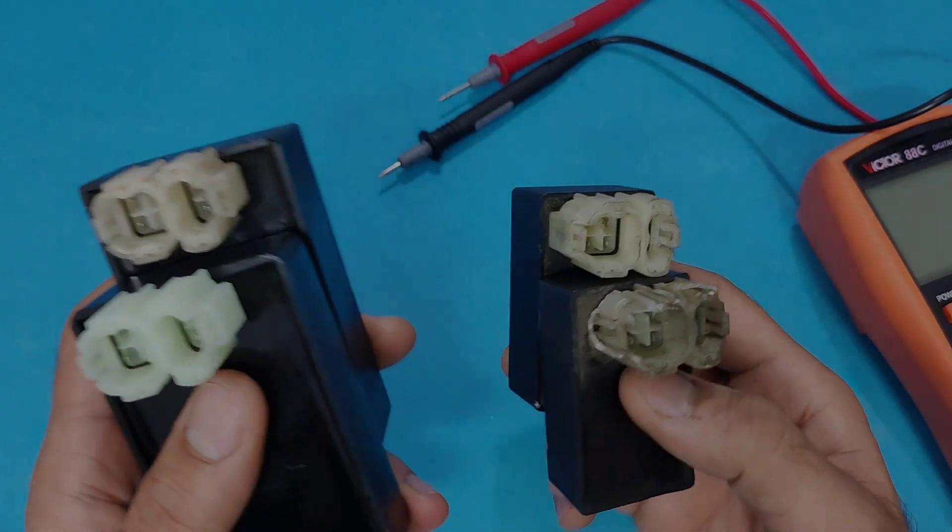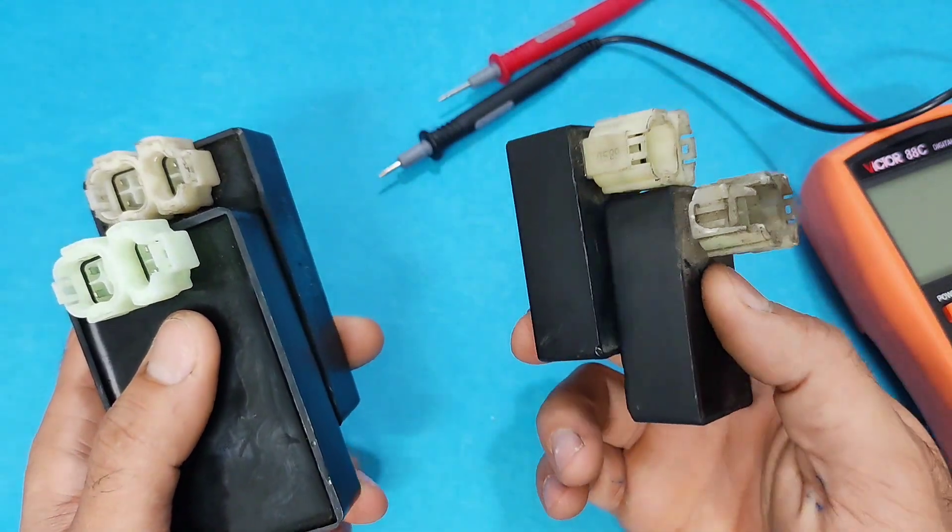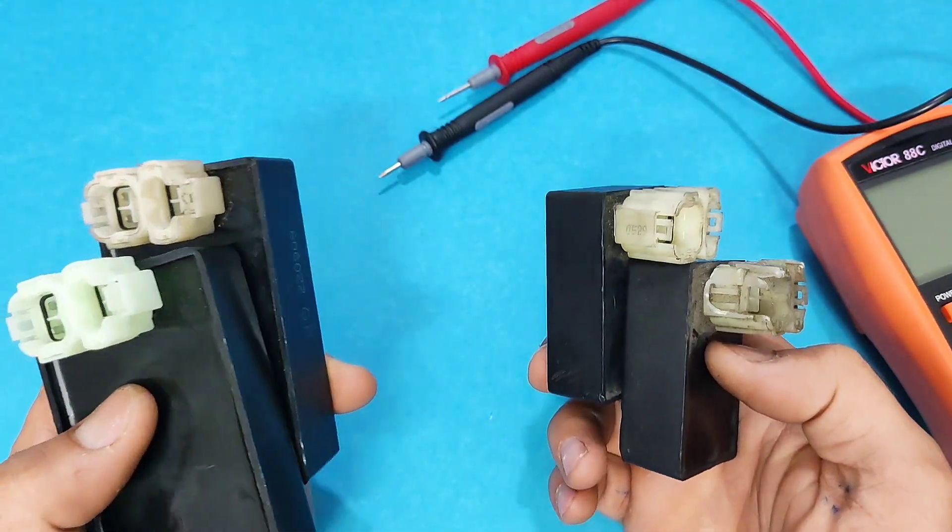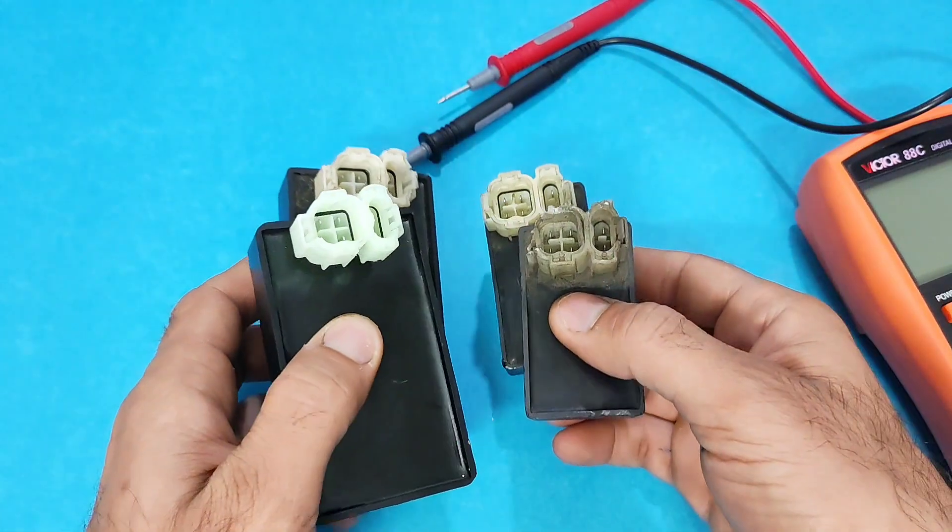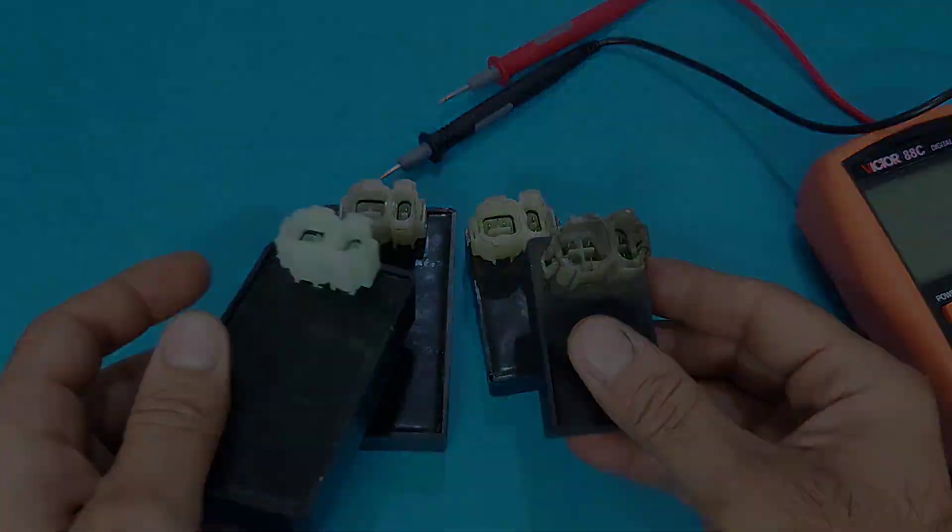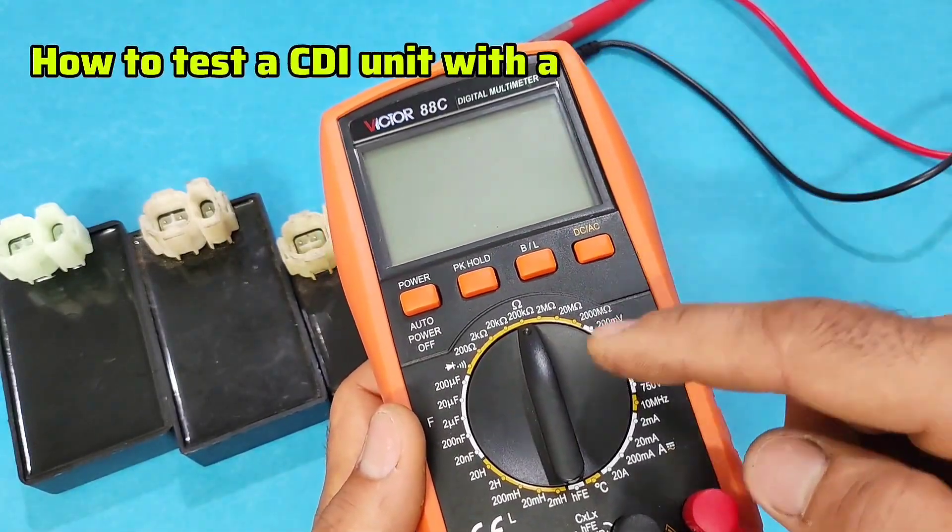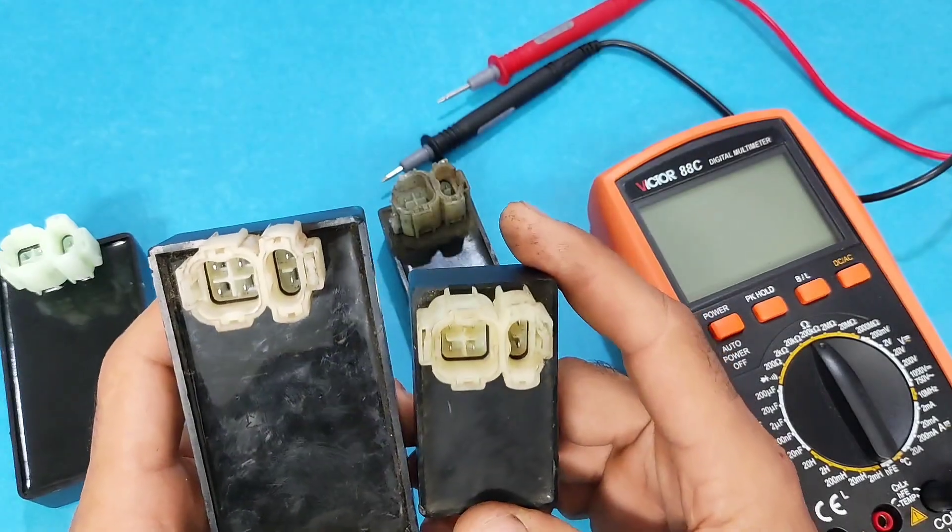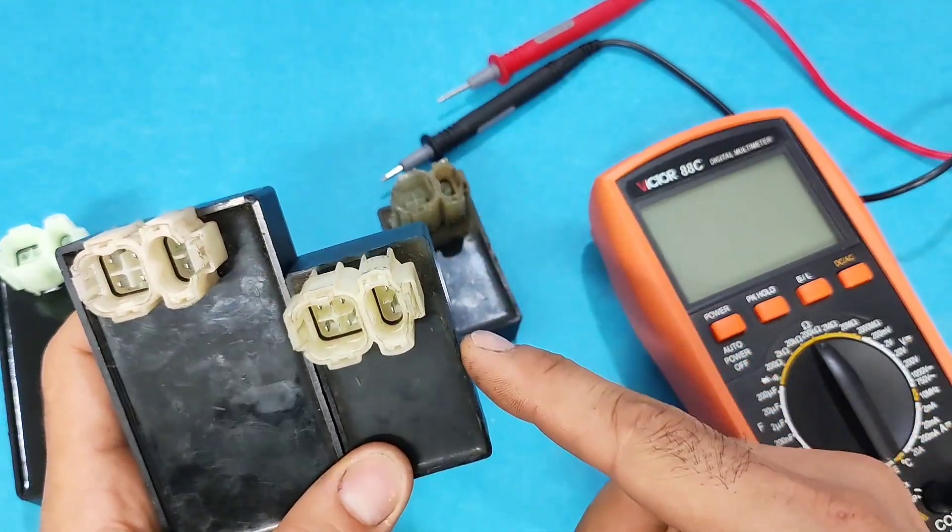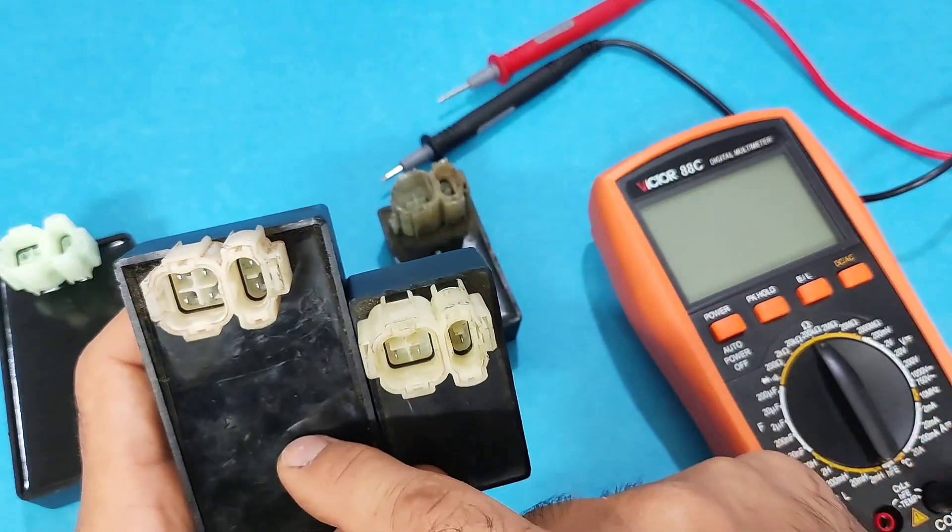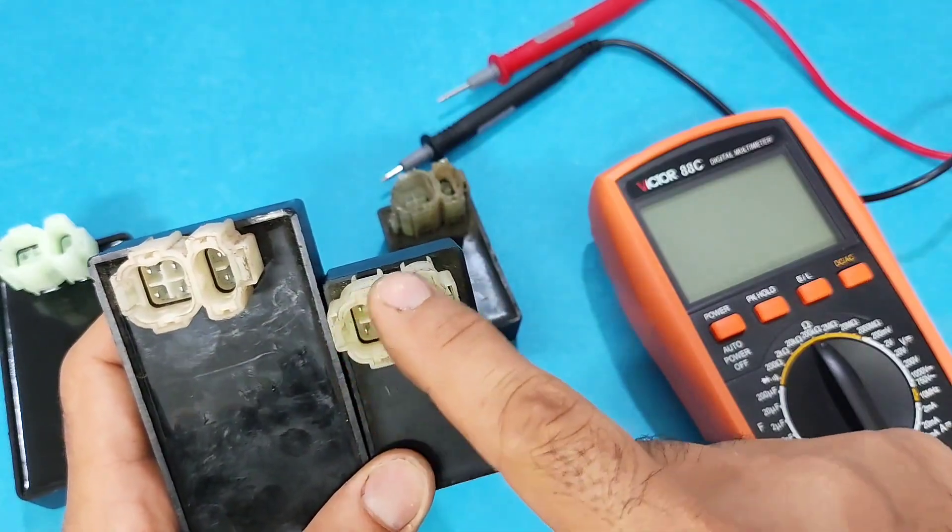Here I have two DC and two AC CDIs, one of which is working and others burned. Now I want to show you how to test a CDI using a multimeter. Before anything, you need to know the type of CDIs and its pinouts.